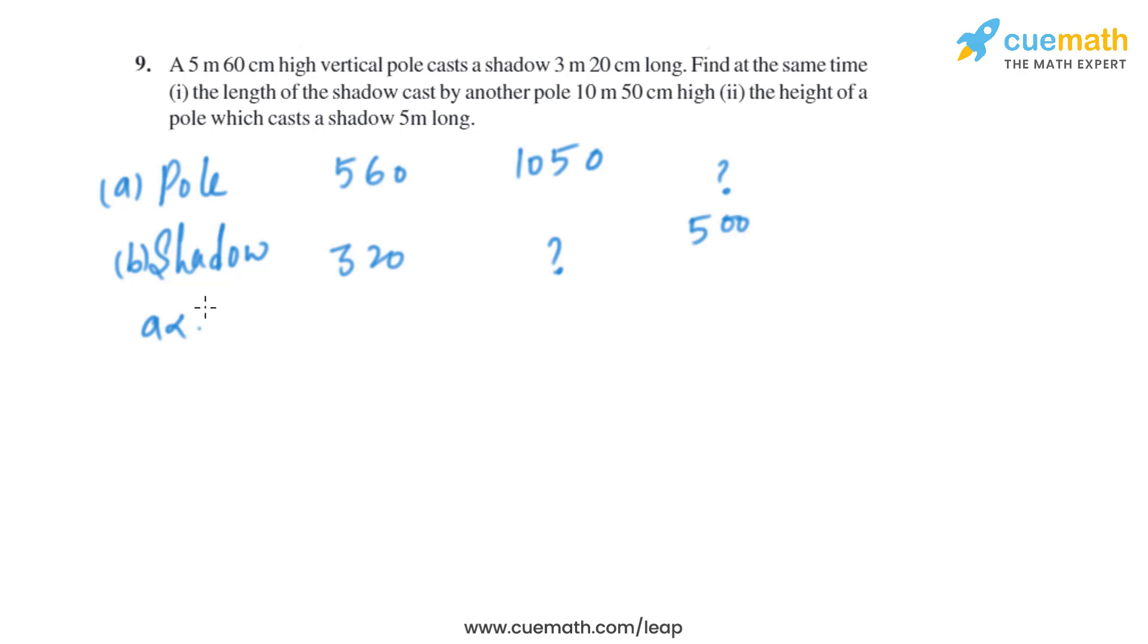As we know that they are in direct proportion, a is directly proportional to b, or a equals k into b. From here we'll get the value of k, that is a by b. We know a and b in the first part, that is 560 divided by 320.